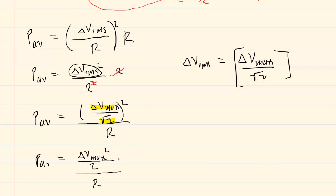We can simplify this complex fraction if we multiply the numerator and the denominator by two. Those twos would cancel, and we would finally be left with a nice looking equation of average power equals delta V_max squared all over two times the resistance.